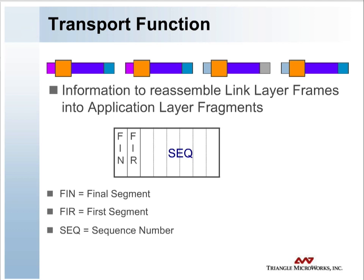This includes a rolling frame sequence number which increments with each frame and allows the receiving transport layer to detect dropped frames.